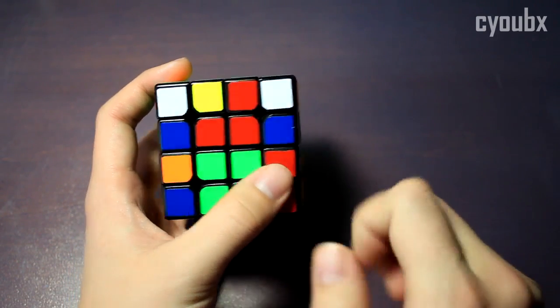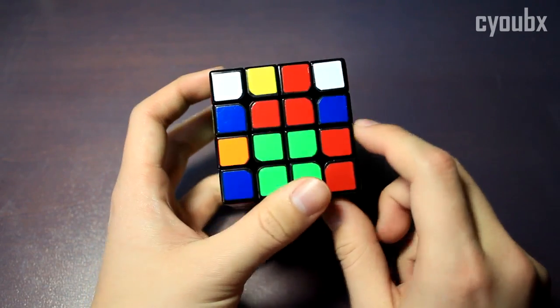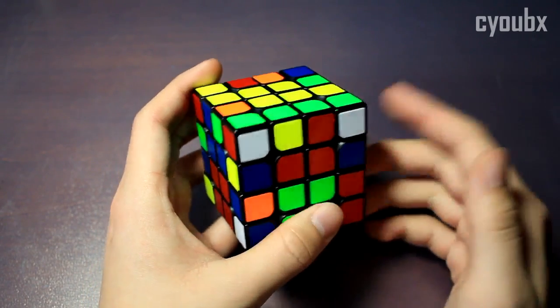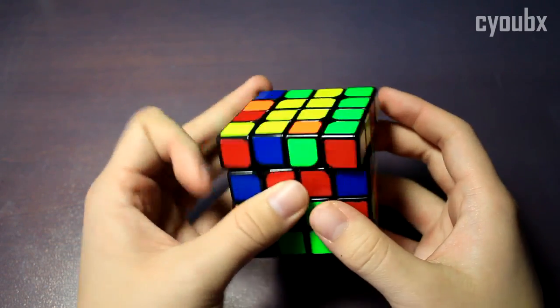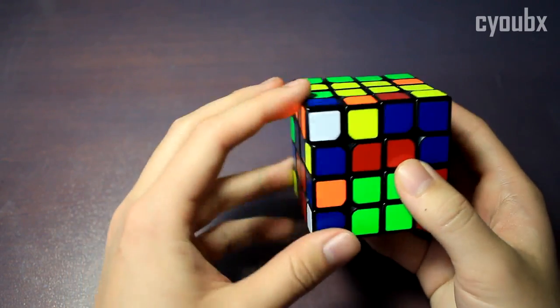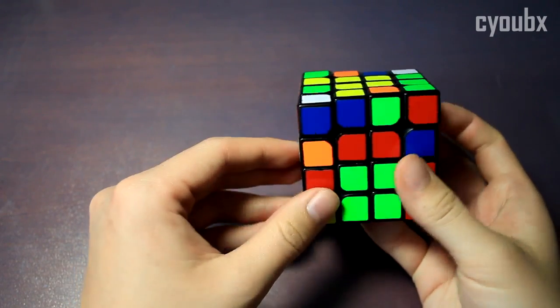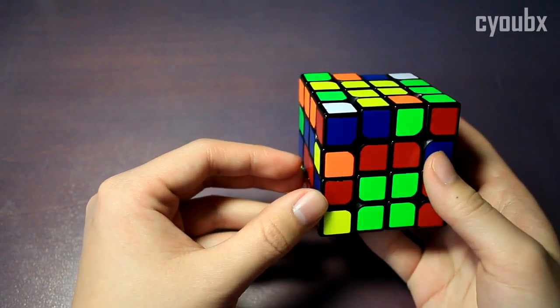So now this is in the correct spot. And again, we look at these two positions. This is blue and red. That means this has to be blue and red. So that's going to be back here. Blue and red has to go down here. So these two are now correctly aligned.